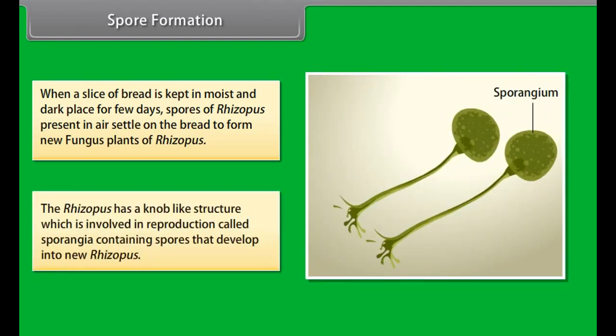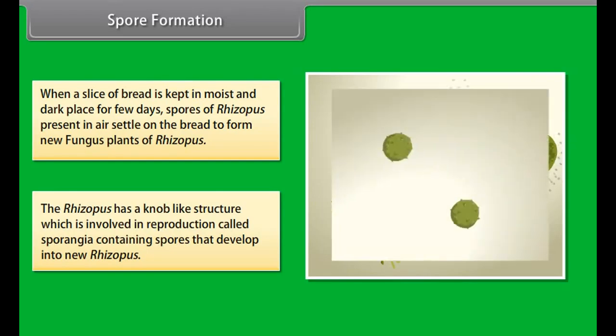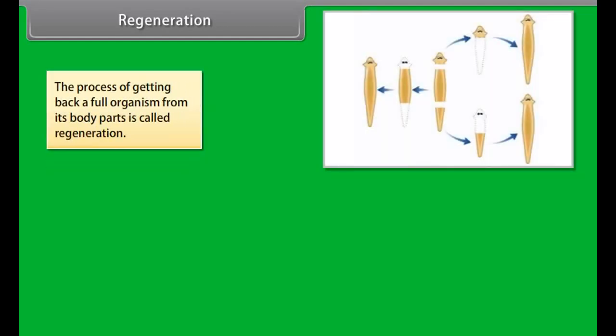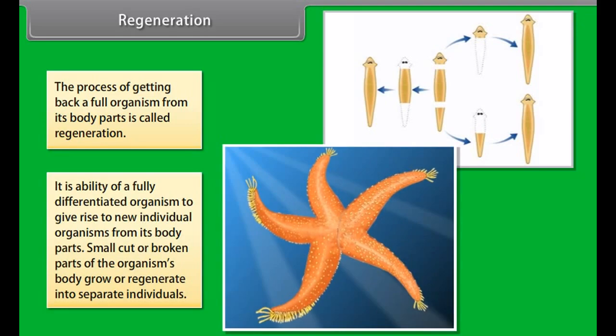When a slice of bread is kept in a moist and dark place for a few days, spores of Rhizopus present in the air settle on the bread to form new fungus plants of Rhizopus. The Rhizopus has a knob-like structure called sporangia, which is involved in reproduction and contains spores that develop into new Rhizopus.